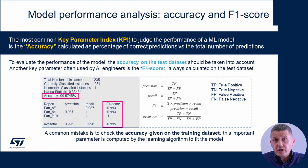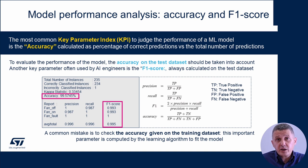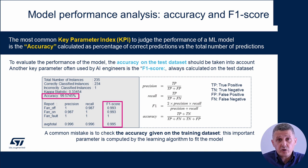Now let's see how to evaluate the performance of the machine learning model once it has been trained on a specific dataset. One very commonly used KPI is the accuracy of the model, which must be calculated on the test dataset. A common mistake by AI beginners is to calculate accuracy on the training dataset, which is not correct as seen in the first video. Another important KPI used by AI engineers is the F1 score, with its specific formula.